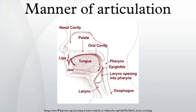The concept of manner is mainly used in discussion of consonants, although the movement of the articulators will also greatly alter the resonant properties of the vocal tract, thereby changing the form and structure of speech sounds that is crucial for the identification of vowels. For consonants, the place of articulation and the degree of phonation or voicing are considered separately from manner, as being independent parameters.